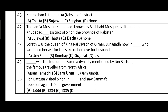Question number forty-seven: the Jamia Masjid Khudabad, known as Bachhai Masjid, is situated in Khudabad, district Dadu, Sindh, Pakistan. Option C is correct. Question number forty-eight: Sorath Rai Raya was the queen of King Rai Raya of Girnar, Junagadh (now in Gujarat), who sacrificed herself for the love of her husband.